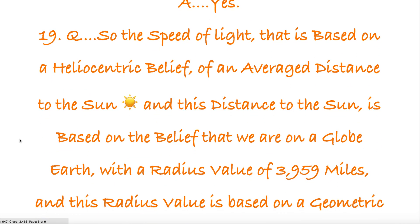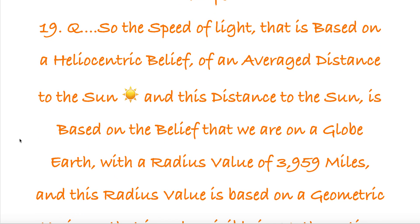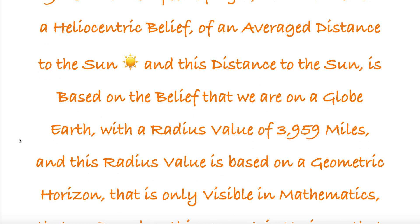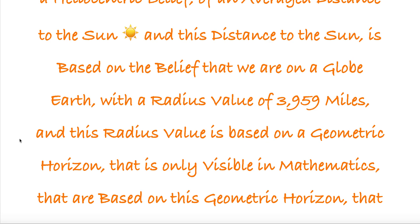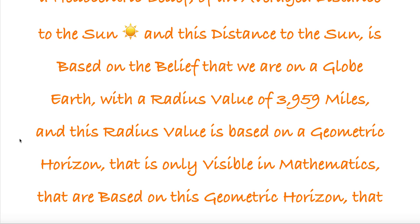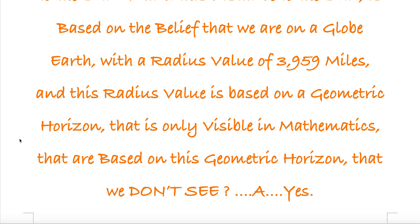So the speed of light is based on a heliocentric belief of an average distance to the Sun. And this distance to the Sun is based on the belief that we are on a globe Earth with a radius value of 3959 miles. And this radius value is based on a geometric horizon that is only visible in mathematics that are based on this geometric horizon that we don't see. Yes.